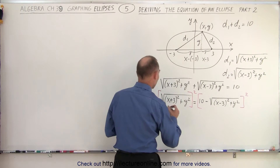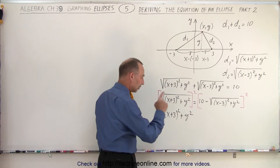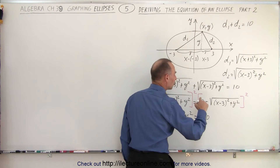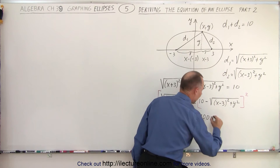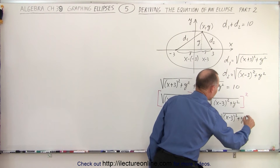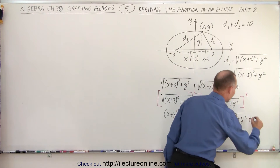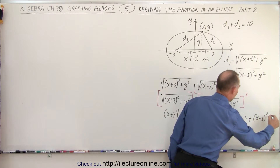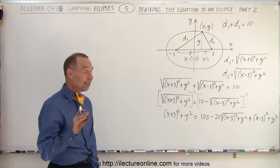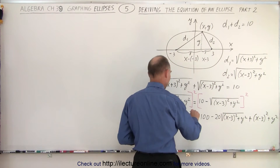When we square the left side, we simply get the quantity x plus 3 squared plus y squared. On the right side, we take the first term squared, which is 100, plus twice the product of those two — with the negative we get minus 20 times the square root of x minus 3 squared plus y squared. And then plus the last term squared, which gives us x minus 3 squared plus y squared. Now we have a y squared on the left side and a y squared on the right side, so those cancel out.